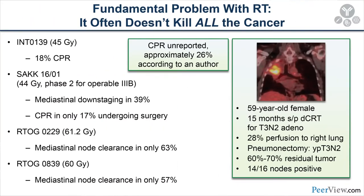The fundamental problem with radiation therapy is that it often doesn't kill all the cancer. From neoadjuvant chemo and radiation trials, complete pathologic response rates are disappointing: Intergroup 0139 had an 18% complete path response rate; SAKK 16/01 had only 17%. Even with higher-dose radiation — RTOG 0229 and RTOG 0839, over 60 Gy — mediastinal nodal clearance was only about 63% and 57% of patients respectively, and complete path response rates were only around 25%.